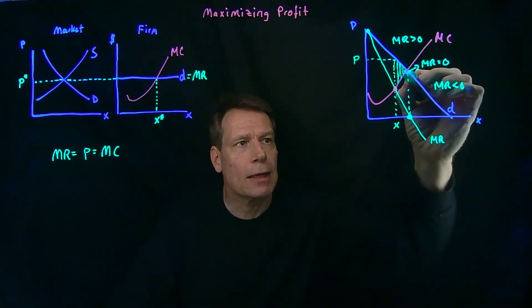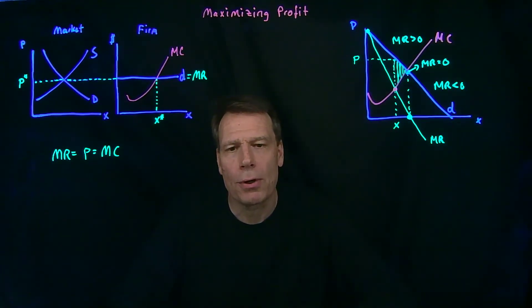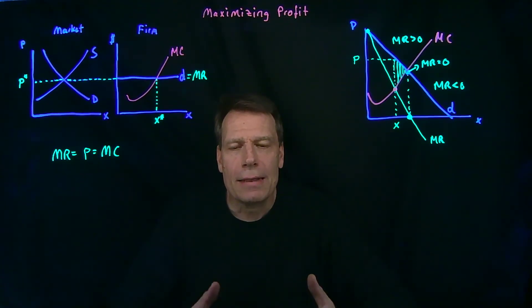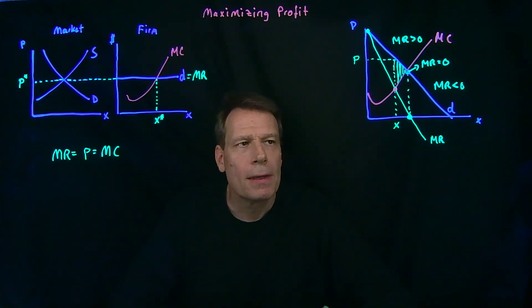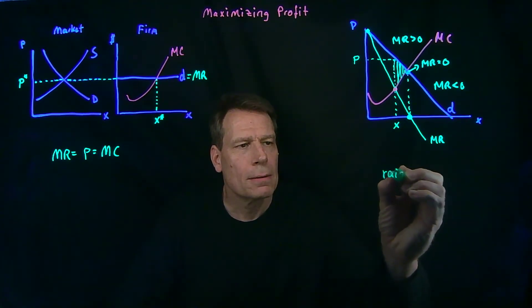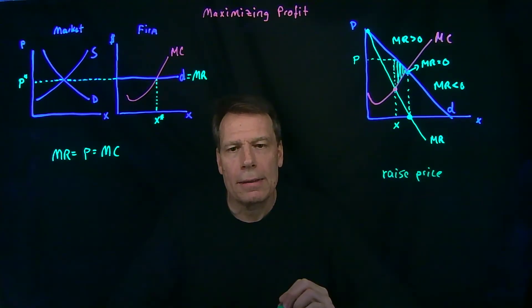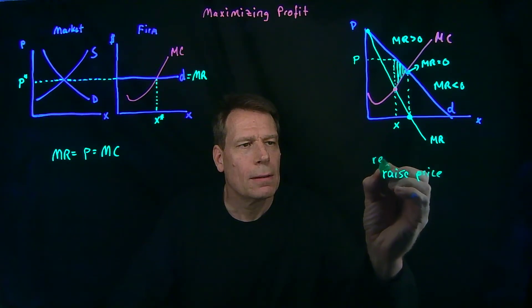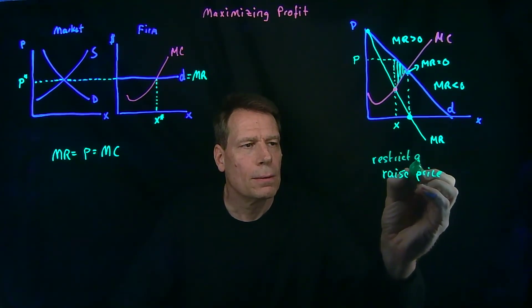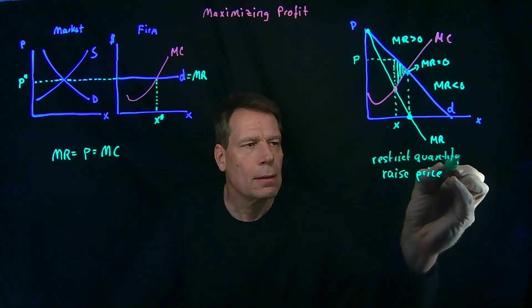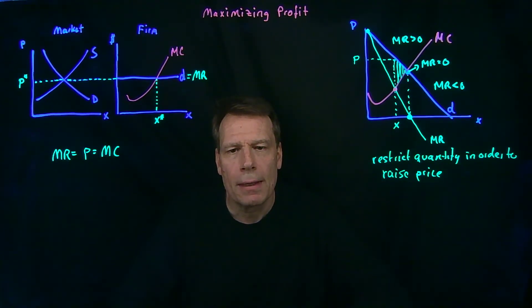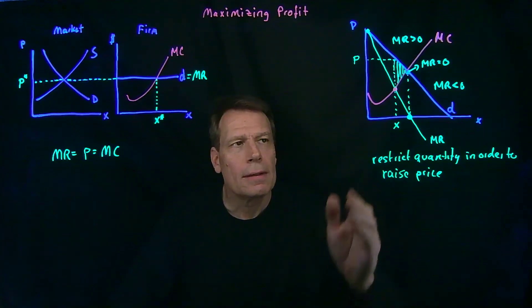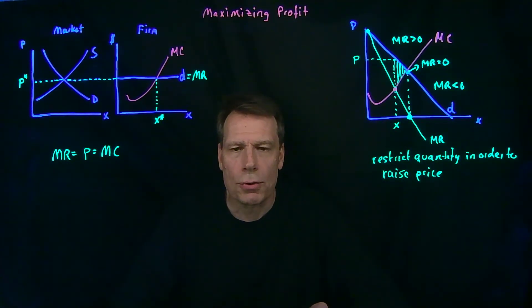That additional surplus that we could get by producing all the way to where marginal cost intersects demand isn't produced in the market where the firm has market power. So the essential problem with market power is that firms raise price, and in order to raise price, they restrict quantity. They restrict quantity in order to raise price and maximize their profit. And through that restriction of quantity, they leave goods unproduced that could generate social surplus.